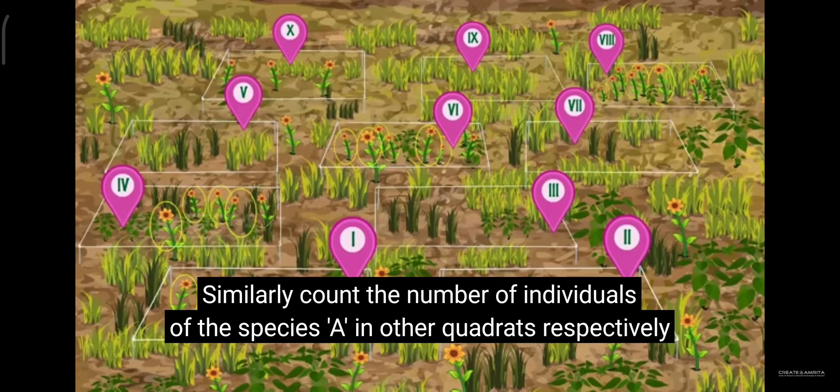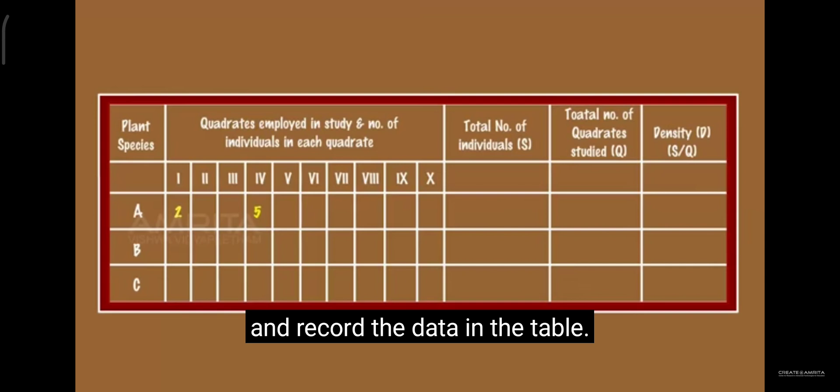Similarly, count the number of individuals of the species A in other quadrants respectively and record the data in the table.